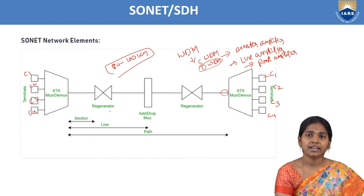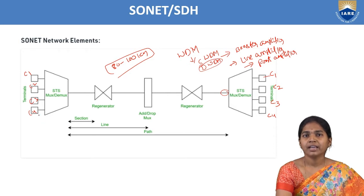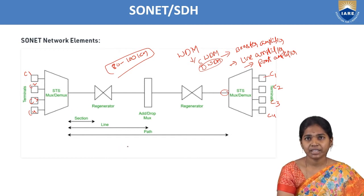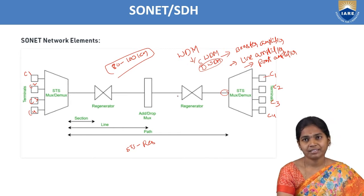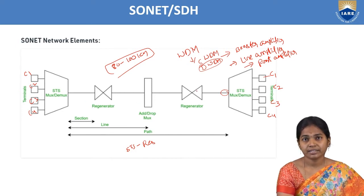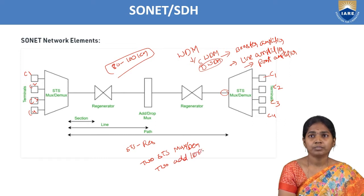In this network, optical links are called section, line, and path. Section is the optical link between neighboring devices — the connection between STS to regenerator, or regenerator to add drop multiplexer, or add drop multiplexer to regenerator, or regenerator to STS multiplexer/demultiplexer. Line is the optical link between STS multiplexer/demultiplexer to the add drop multiplexer, add drop multiplexer to STS multiplexer/demultiplexer, or two STS mux/demux, or two add drop mux.